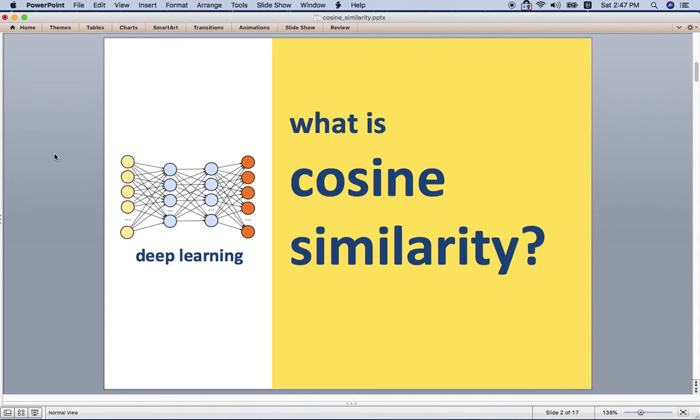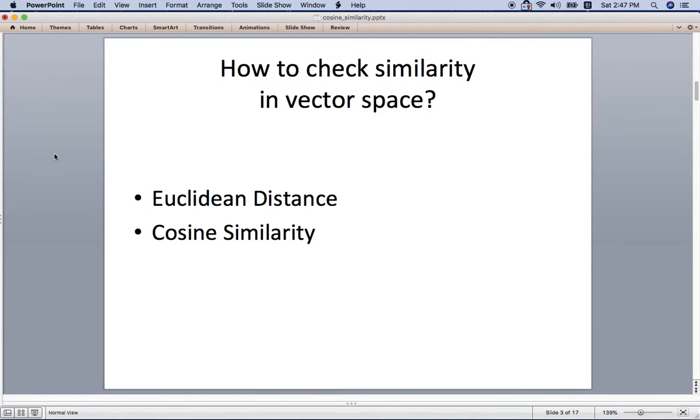Hi everyone, in this video I'm going to go over how we can get the similarity in the vector space. There are two main ways to do it: first is Euclidean distance, second one is cosine similarity.